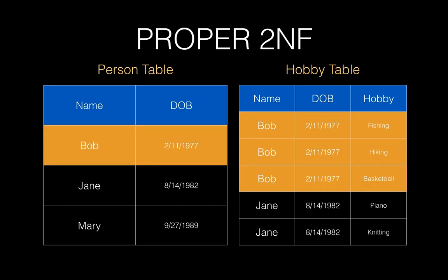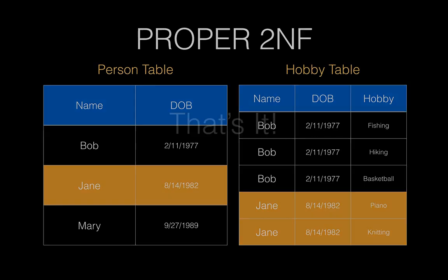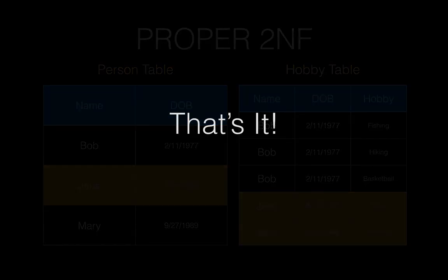So in the case of finding the fishing hobby, we depend entirely on both Bob and his date of birth. The same works for all the other records in our table. And that's it — at this point, you've complied with the first and second normal form.